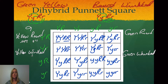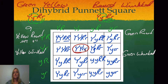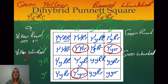Next I'm going to look for the yellow wrinkled. I need to find the ones that are dominant for yellow and recessive for the round trait — so I'm looking for lowercase r's where there are uppercase Y's. Going through, I find three that fit that category, so there are three yellow wrinkled.